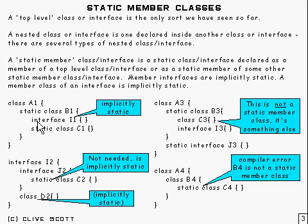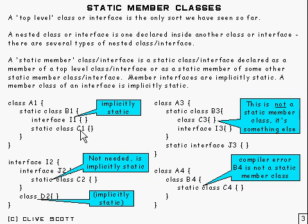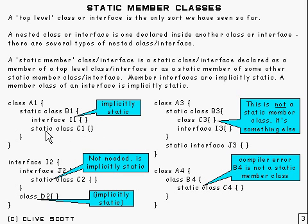Inside of that, you have yet another thing — this is an interface, a static member interface. That's the only sort of interface you can have. You'll see you don't have to declare it as static because it's implicitly static. You can put it in if you want to, but you don't have to. And inside that is yet another static member class, C1, inside of B1. So we've got quite a tree here, and you can see you can put static member classes inside of other static member classes. You don't see that very often, but you can do it.